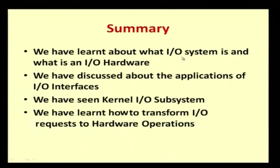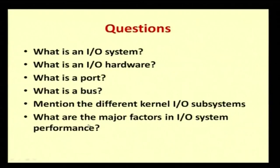Let us summarize today's lecture. We have learnt about what an I/O system is and what is I/O hardware. We discussed the applications of I/O interfaces. We have seen the kernel I/O subsystem and its architecture. We have learnt how to transform I/O requests to hardware operations. Possible exam questions: What is an I/O system? What is I/O hardware? What is a port? What is a bus? Mention the different kernel I/O subsystems. What are the major factors in I/O system performance? Thank you.